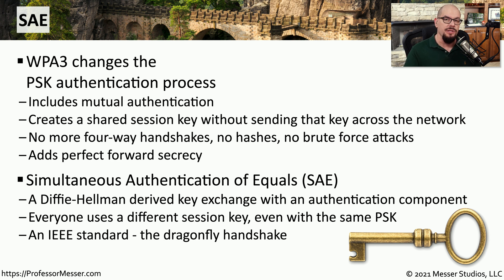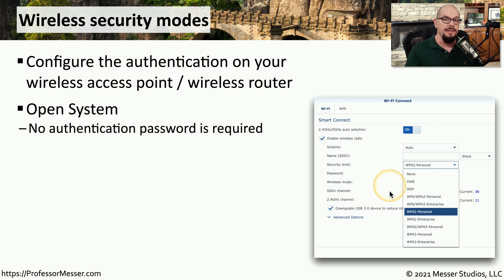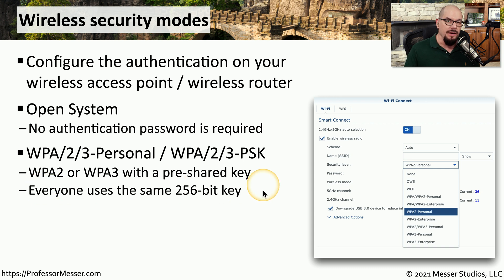Simultaneous Authentication of Equals is built into the IEEE standard and may also be referred to as the dragonfly handshake. When configuring your access point, you'll find a number of security options available. One configuration is an open system — no encryption and no authentication required; you simply connect and communicate. In our homes, we commonly use a pre-shared key across all devices, sometimes called a WPA2 or WPA3 Personal connection, also referred to as WPA2 or WPA3 PSK. Anyone new to the network must be given that pre-shared key to gain access.